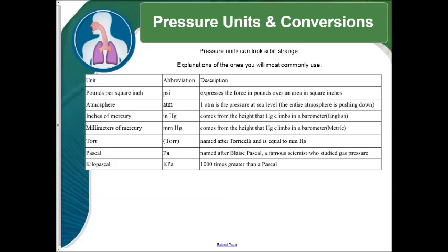Now we have several different pressure units and conversions. Pressure units can look a bit strange, so you have to keep in mind that all of these things right here, these are all different types of pressure units. The most commonly used are PSI and atmosphere, but you also have inches of mercury, millimeters of mercury, torr, which was named after Torricelli, and pascal and kilopascal.